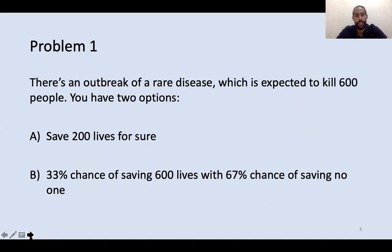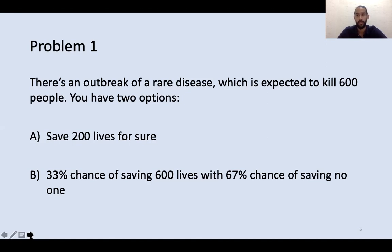Let's assume there's an outbreak of a rare disease expected to kill 600 people, and you have two options. Option A: you can save 200 lives for sure. Option B: there's a 33% chance of saving all 600 lives, with a 67% chance of saving no one. Take a moment to decide which option you would pick. I'm going to guess most of us picked Option A — I certainly did.